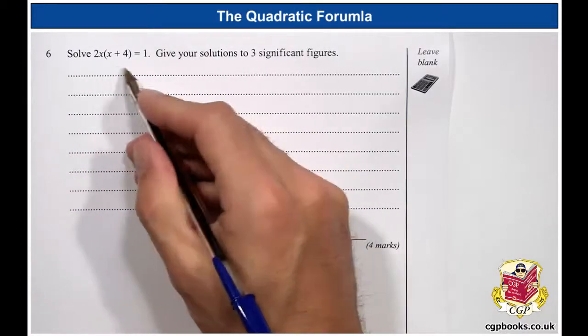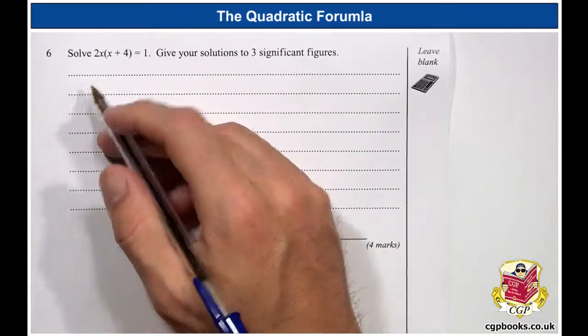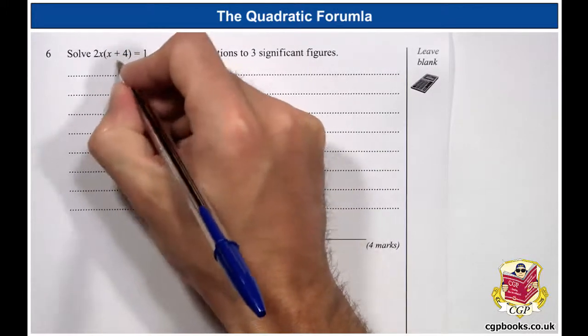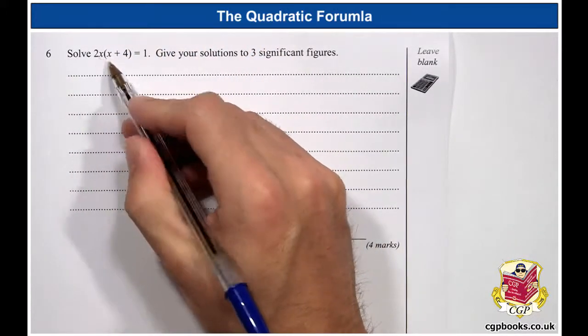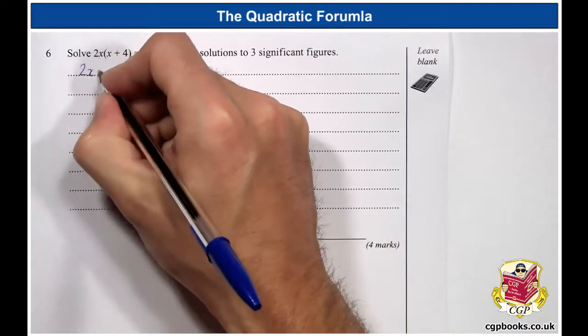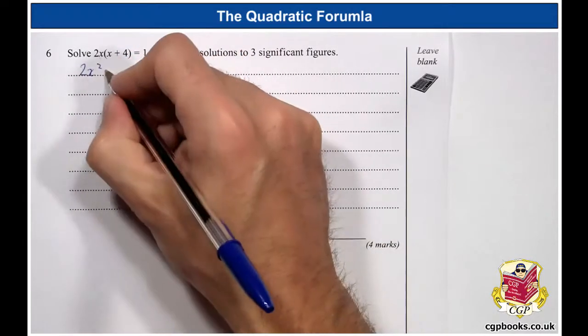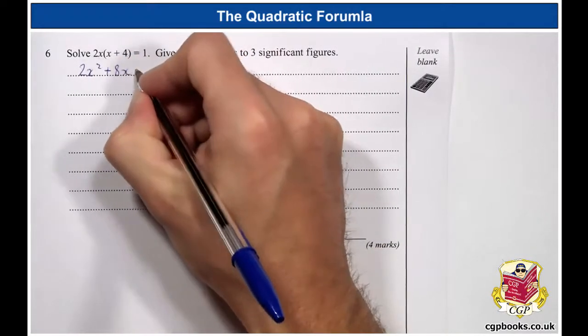Right, we've got an equation to solve, but in this format we can't do much with it, so we need to put it into the standard format. So expand these brackets first of all. 2x times x, that's 2x squared. 2x times 4, that's plus 8x, equals 1.